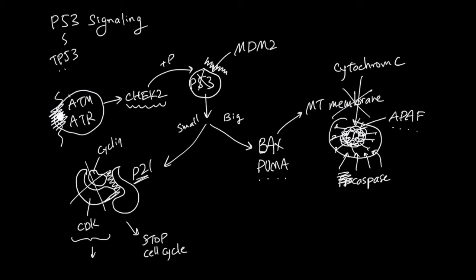What do caspases do? They go out and start chewing other proteins, including other pro-caspases. When caspases cleave a pro-caspase, another caspase is made. This chain reaction results in many, many caspases. And these caspases will start chewing up DNA, RNA, membrane, and everything within the cell, eventually leading to apoptosis.